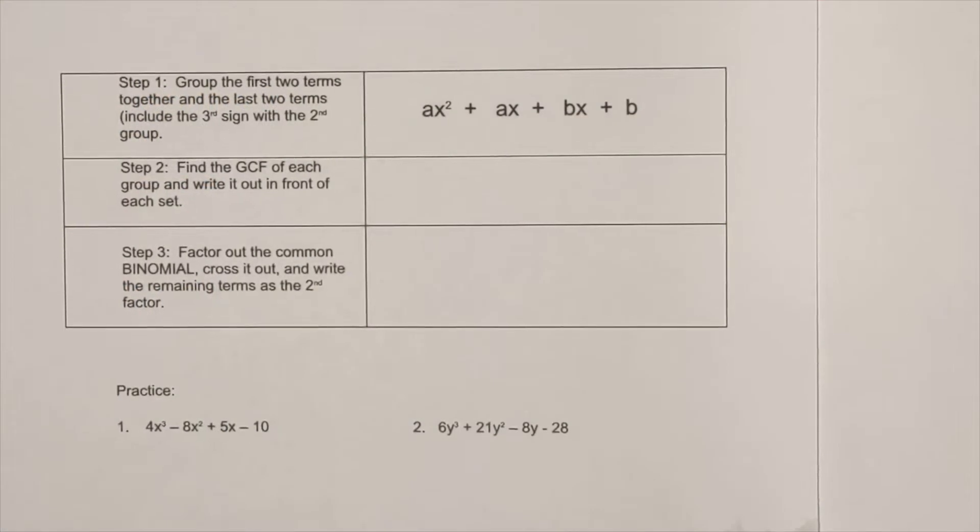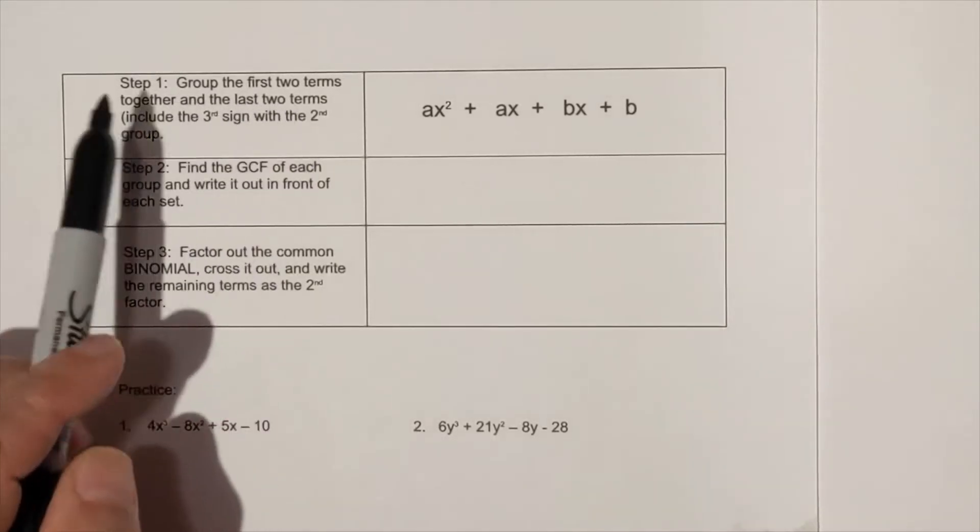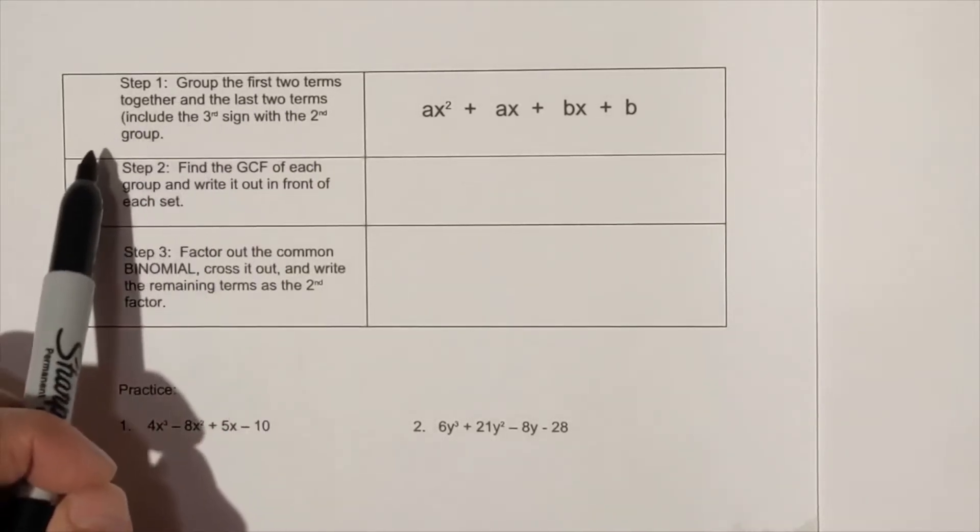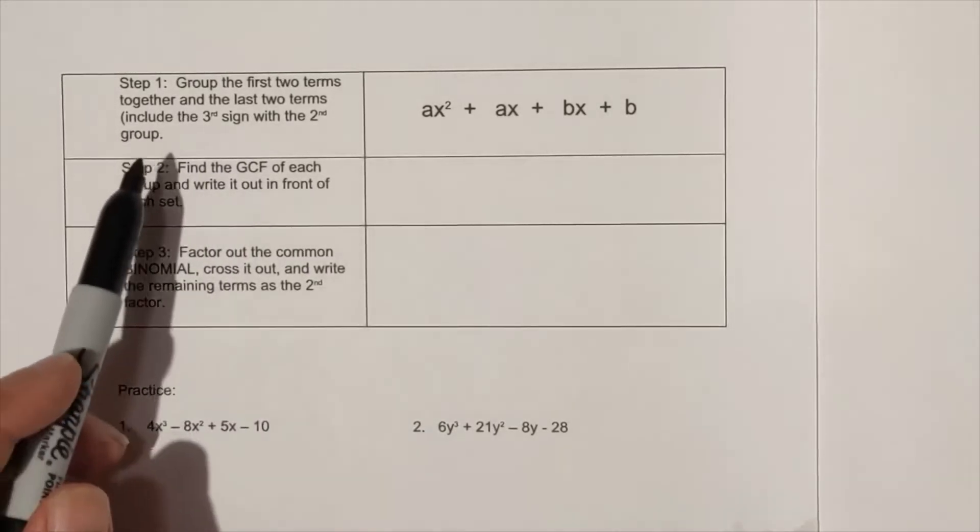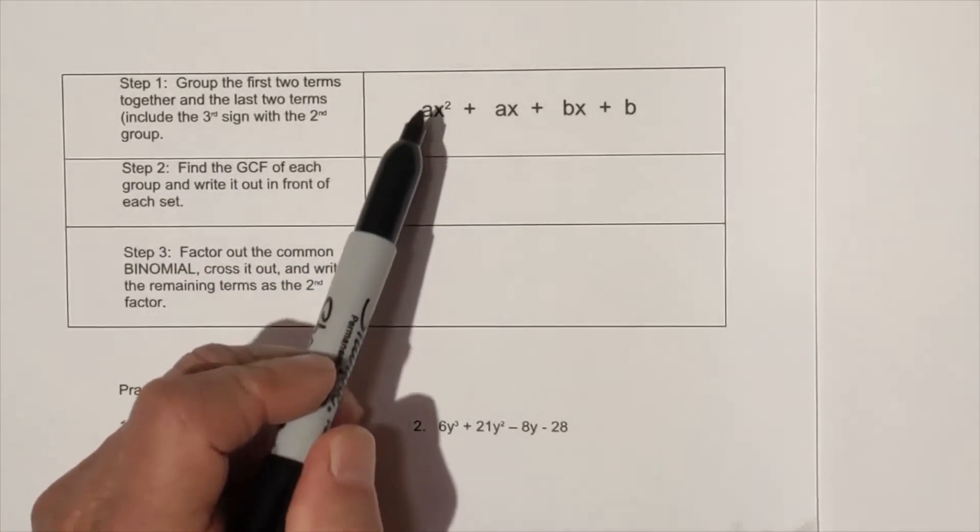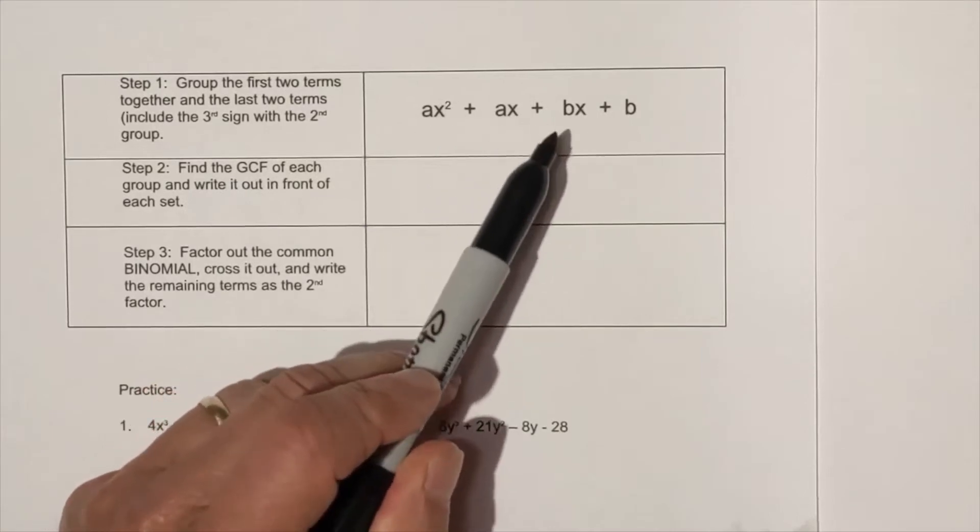Okay, let's get started with factoring by grouping and let's go through the steps. Step one is you group the first two items together and the last two terms, include the third sign in the second group. Let me just go through this first. Factoring by grouping works when you have four items like this: one, two, three, four.